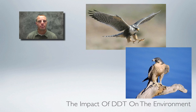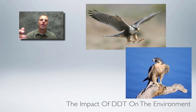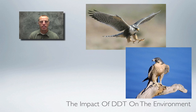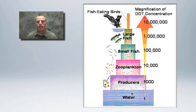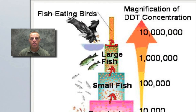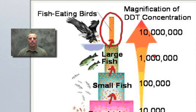The falcon population dropped drastically because of this chemical environmental change. Looking at a food chain pyramid, the small dots represent DDT concentration. At the producer level the concentration is low, but it increases at every level going up — reaching very high concentration in the falcon at the top. These numbers on the right represent the concentration levels at each trophic level.